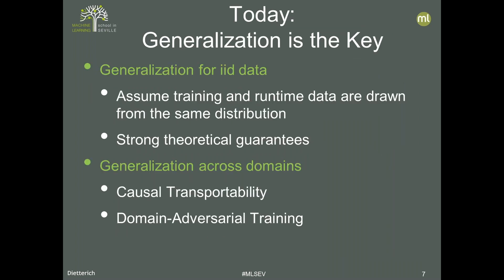Today, generalization is the key. We are interested in generalizing from what we call independent and identically distributed data. If we can assume the data we are seeing is not changing over time — that it is stationary — then we can give very strong theoretical guarantees for machine learning. We know that if the training set is large enough and we use the right algorithms, we will do well at accurately predicting future points. But we're now seeing in many applications that this assumption of stationarity is rarely true in practice.